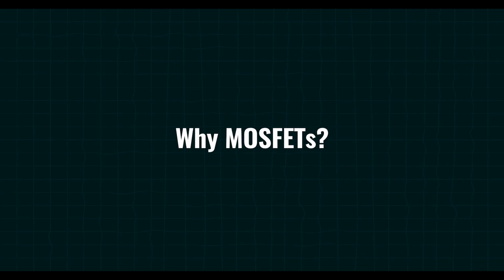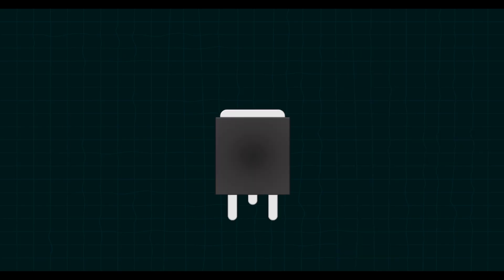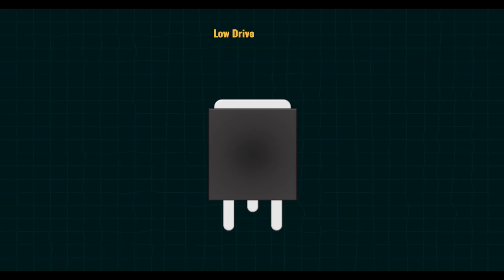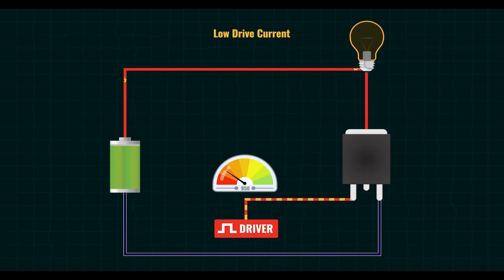But the question is why we specifically use MOSFETs. Imagine a water tap that's controlled electronically rather than manually. The tap doesn't need physical force, just a simple electrical signal to open or close. Similarly, MOSFETs are electronic switches controlled by voltage rather than current. MOSFETs come with two significant advantages that make them ideal for battery management. First is low drive current. Unlike mechanical switches or traditional transistors, MOSFETs require extremely low input current to control their switching action. Just a small voltage at the gate terminal can turn a MOSFET fully on or off. This efficiency reduces the energy needed to operate them, extending battery life.